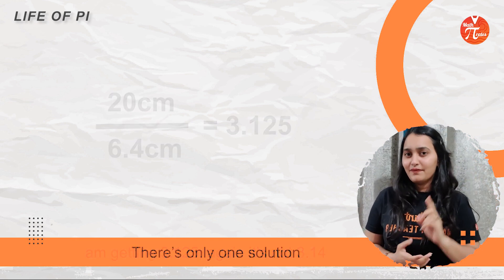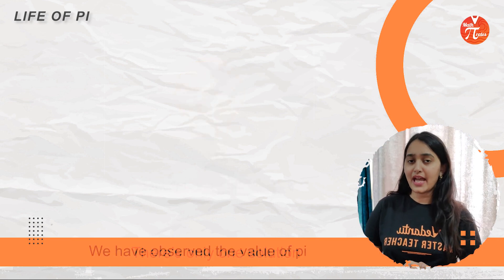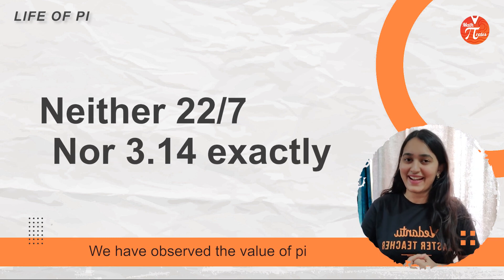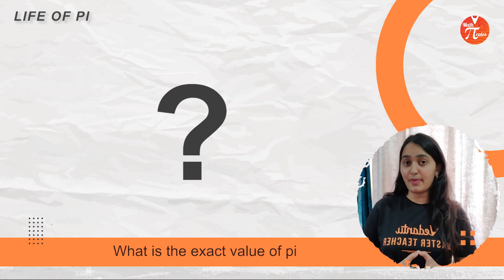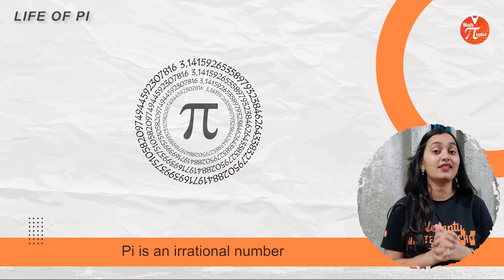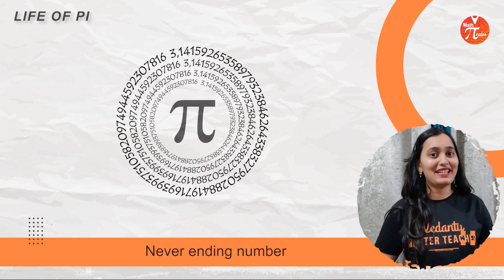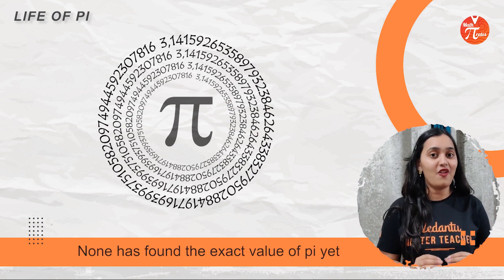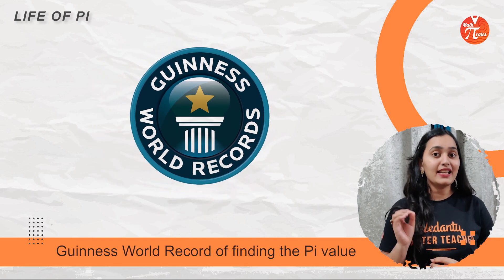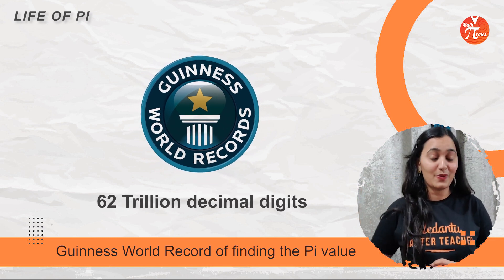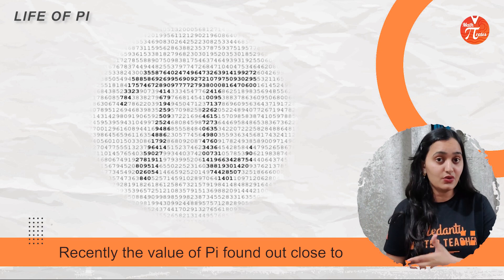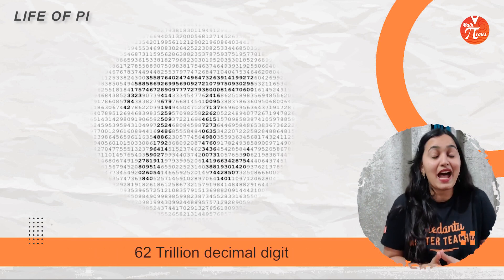So what is the exact value of Pi? We have observed that the value of Pi is neither coming to be 22 upon 7 nor exactly 3.14. Pi is basically an irrational number, which is non-terminating, non-recurring, and never-ending. Nobody has ever found the exact value of Pi yet. Can you believe that very recently there was a Guinness World Record of finding the value of Pi correctly to 62 trillion decimal digits? How amazing is that!